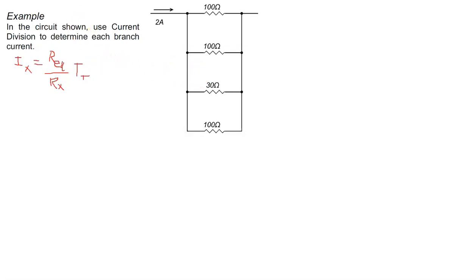So if we want to apply current division to this circuit, we have to find the total resistance. We recognize there are three equal resistors in this branch, so the equivalent resistance of the three 100 ohm resistors is 100 ohms divided by three, which gives us 33.3 ohms.